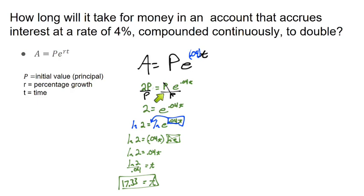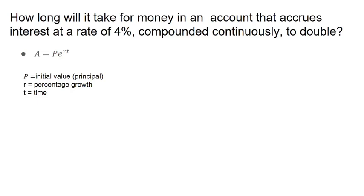So I want to re-emphasize the amount of time it takes to go from $1 to $2 is the same as it would take to go from $1,000 to $2,000. The amount it takes to double does not depend on the initial principal investment. So no matter what we use for P, we would have this right here. Let's do another example.